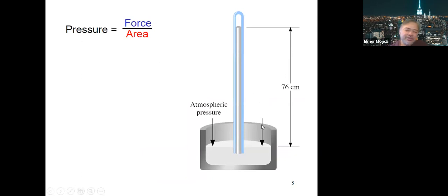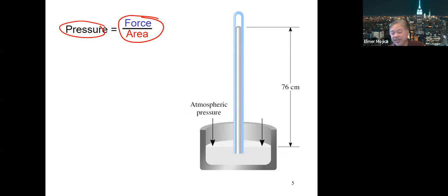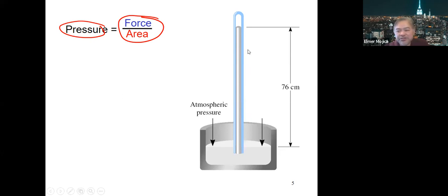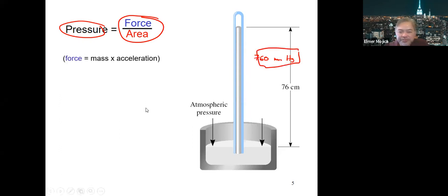One key property gases exhibit is pressure — force over area. Gases exert pressure; liquids and solids don't have this property in the same way. Pressure can be measured using a liquid like mercury: at atmospheric level, the height of mercury is around 76 centimeters, or 760 millimeters of mercury. That is the standard basis for measuring vapor pressure. Pressure also equals force, which equals mass times acceleration.